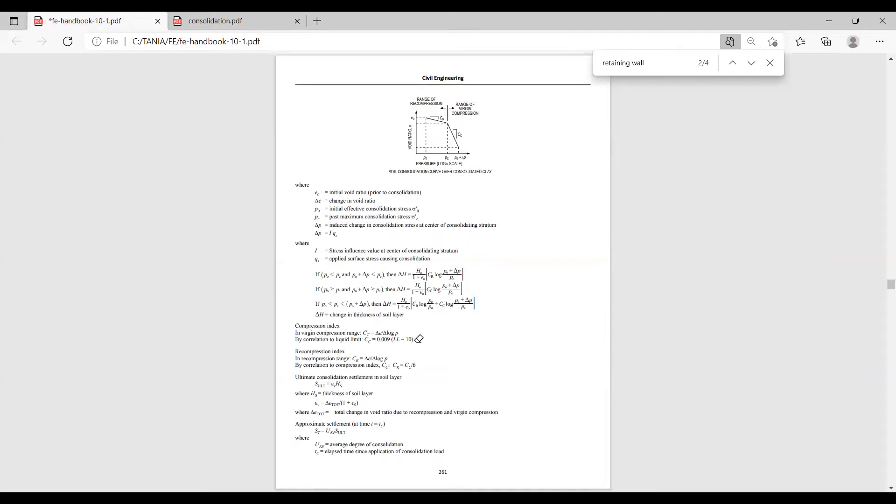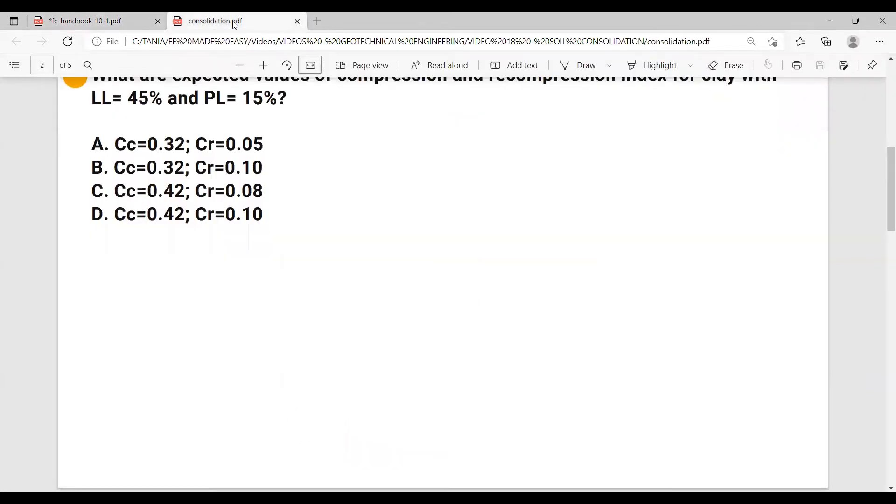Compression index is 0.009 times liquid limit minus 10. So let's write this down. Compression index equals 0.009 times liquid limit minus 10 equals 0.009 times 45 minus 10 equals 0.315.